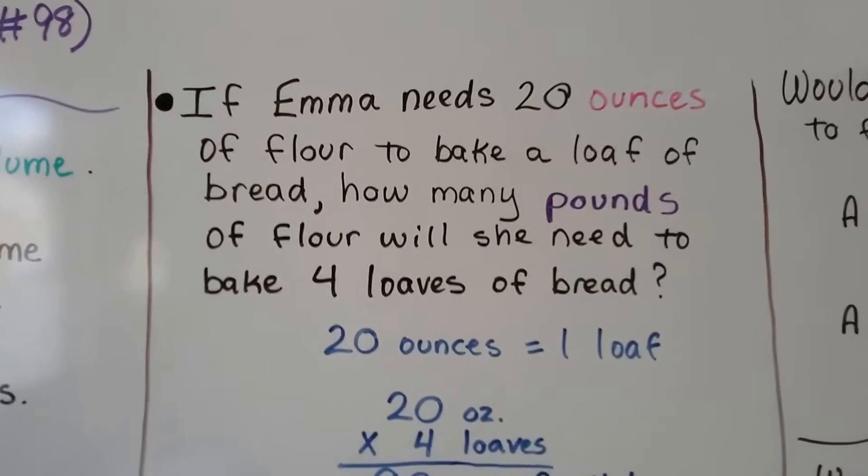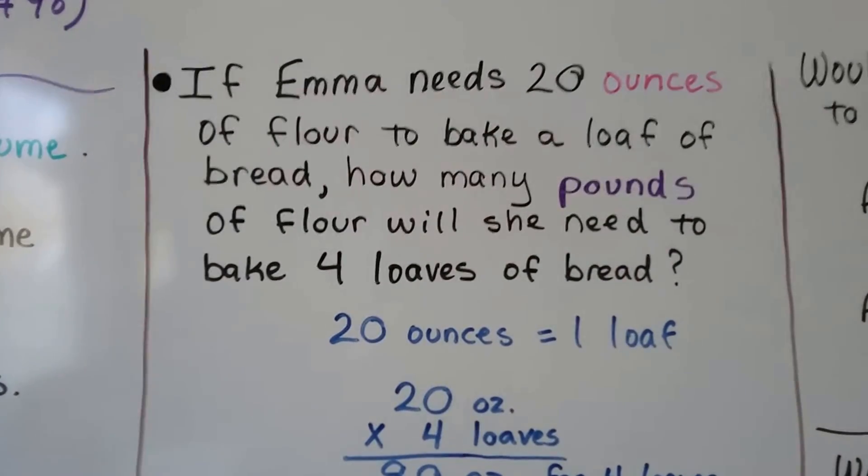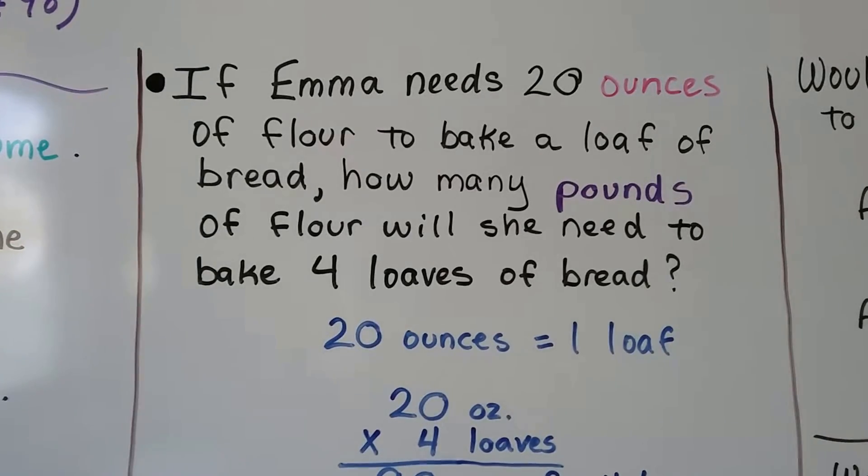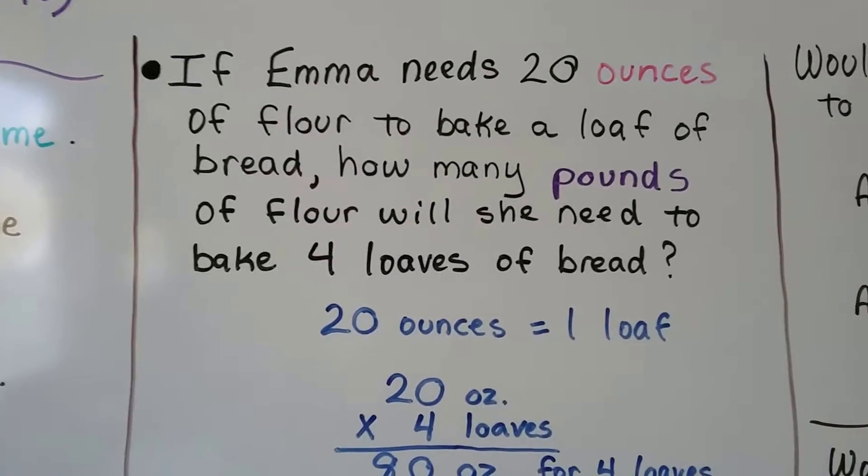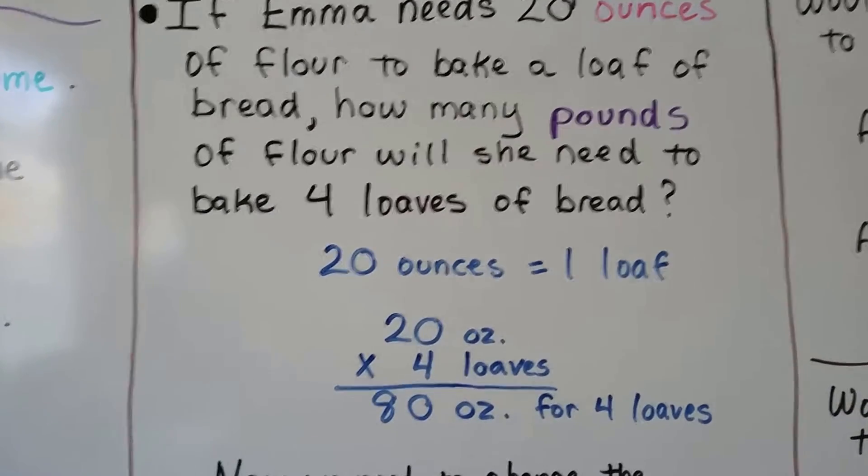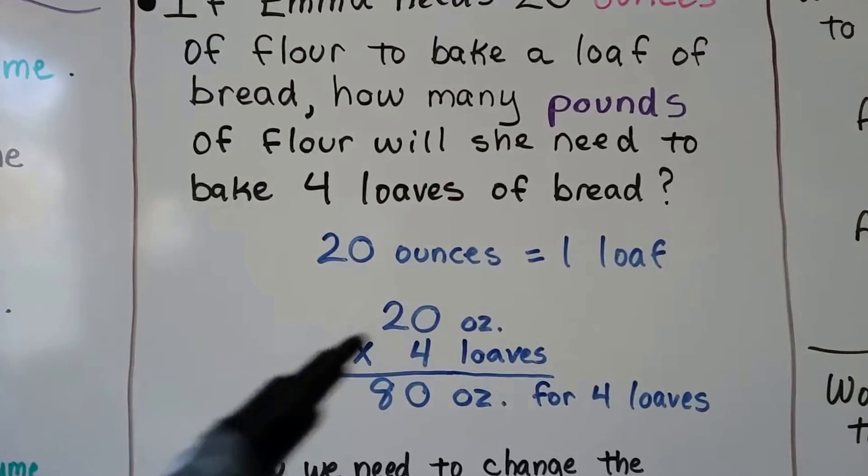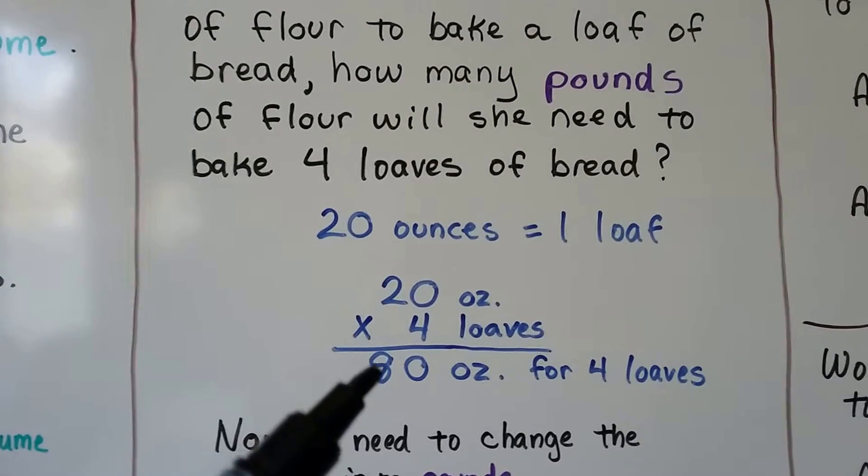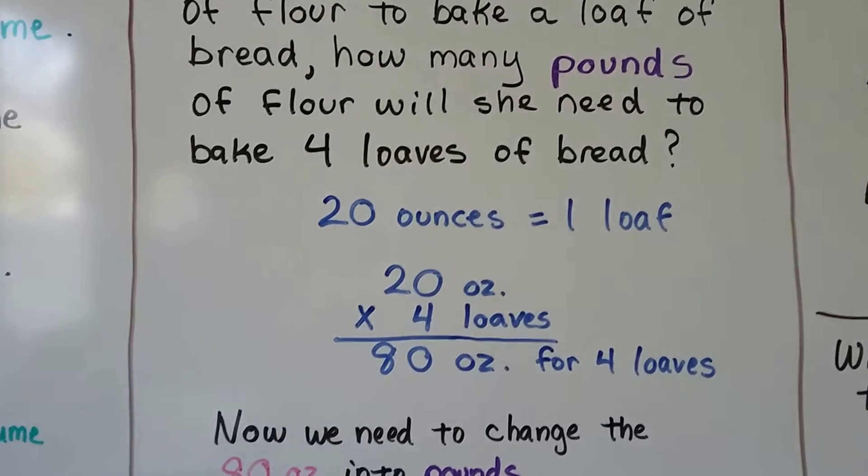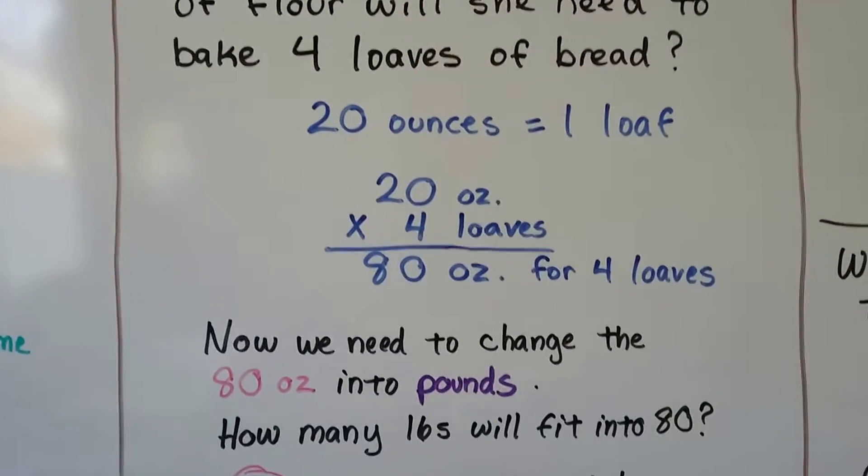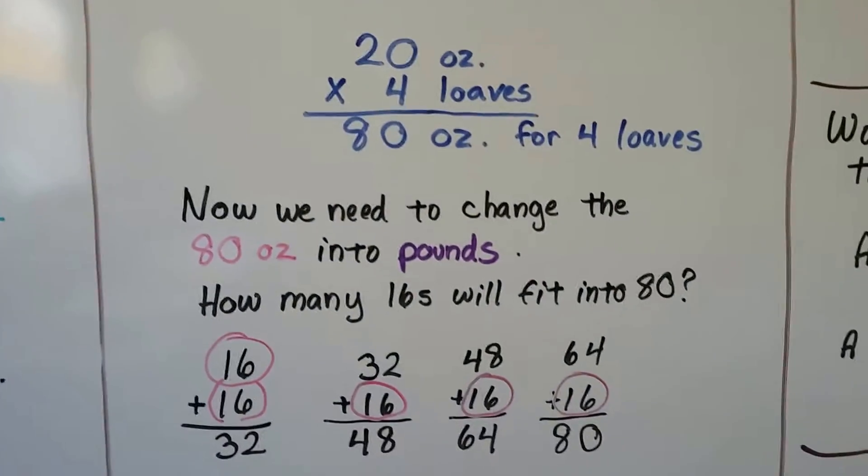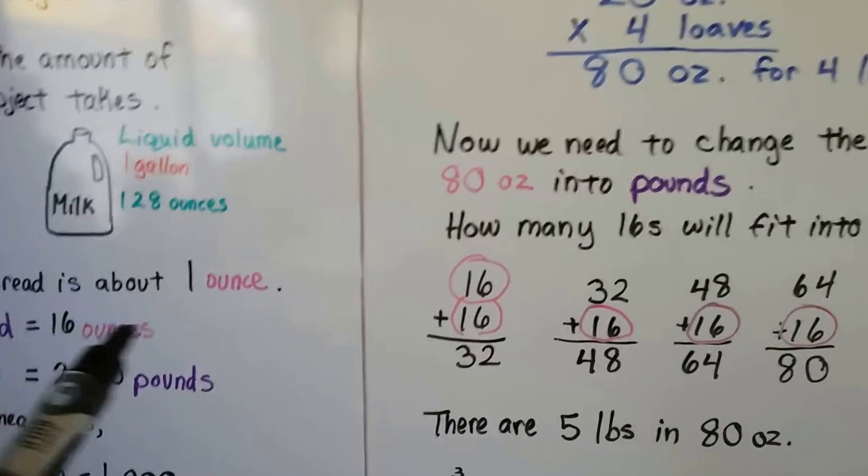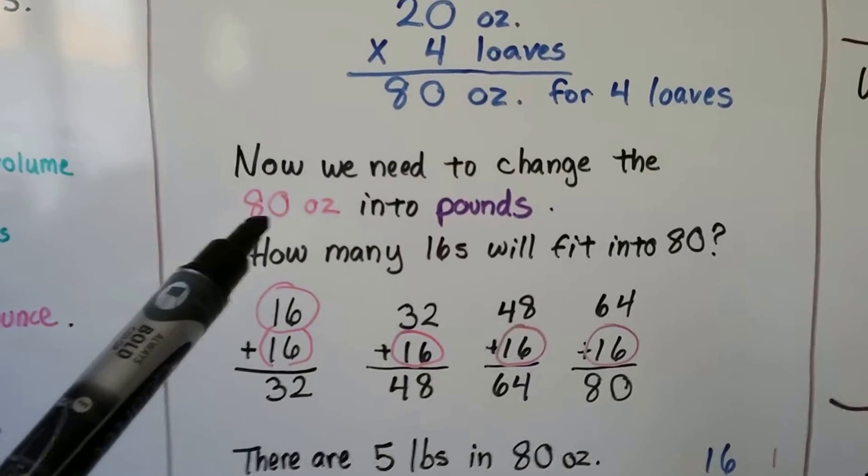If Emma needs 20 ounces of flour to bake a loaf of bread, how many pounds of flour will she need to bake four loaves of bread? Well, 20 ounces is one loaf, so we would need four of them. We would do 20 times 4. 20 ounces times 4 loaves. 4 times 0 is 0, and 4 times 2 is 8. That would be 80 ounces for 4 loaves. Now we need to change the 80 ounces into pounds. So how many 16s will fit into 80?